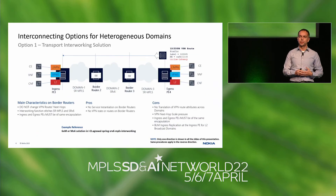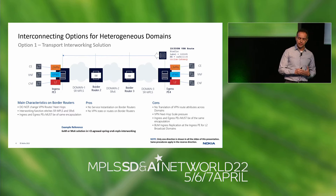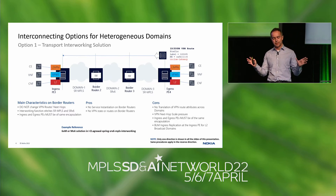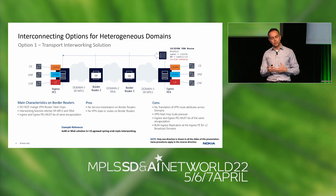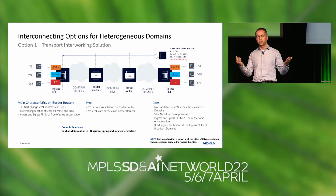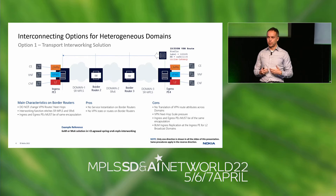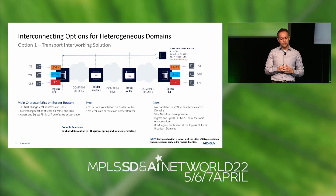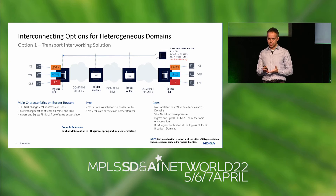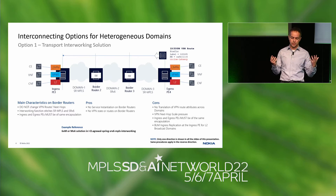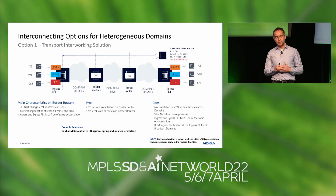The first group is what we call the transport interworking solution. We'll use the same example across all the slides: ingress PE1, border router 2, border router 3, and an egress PE. Both ingress and egress PEs are attached to the same layer 2 and layer 3 VPN services. In this option one, the border routers are not changing the VPN routes at all — they are just providing transport interworking, stitching SRV6 to other technologies like SRMPLS, or even encapsulating SRMPLS over SRV6. The key thing is they provide a translation layer at the transport level.